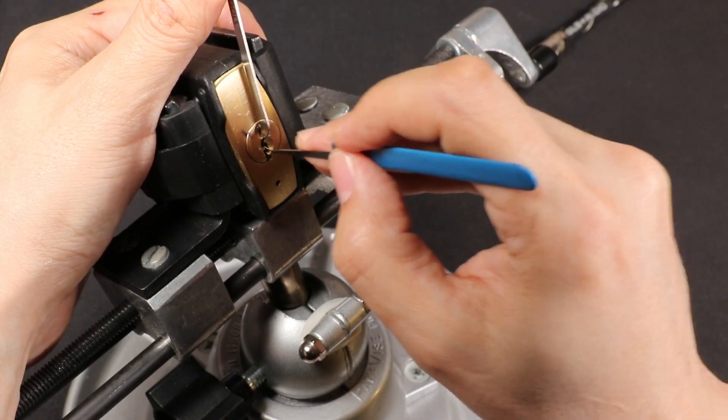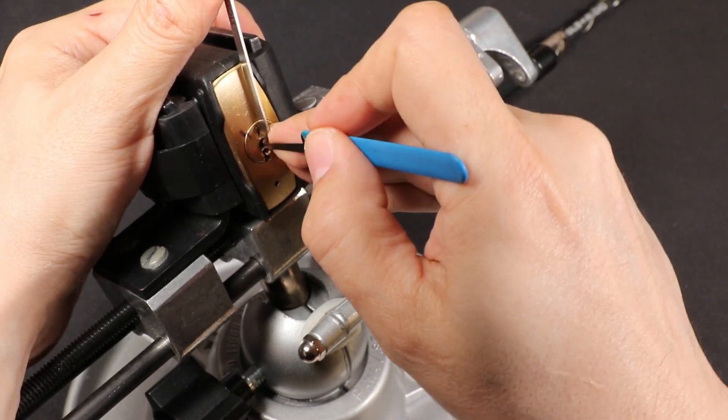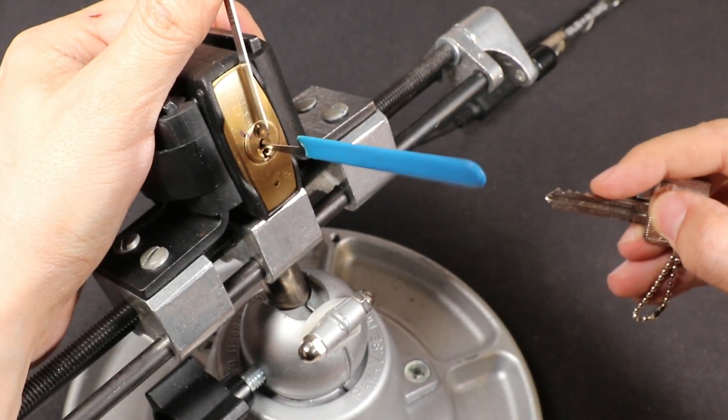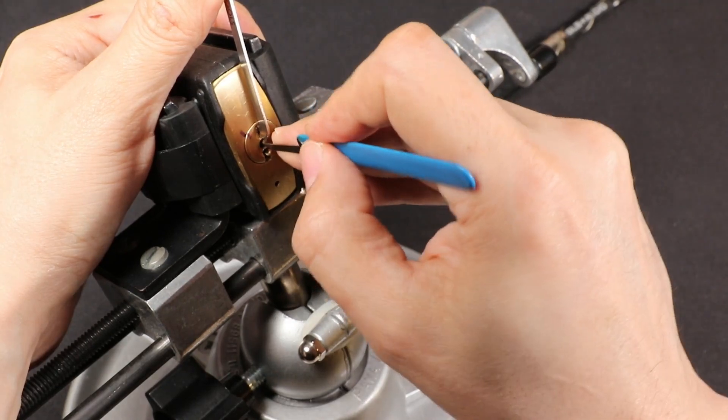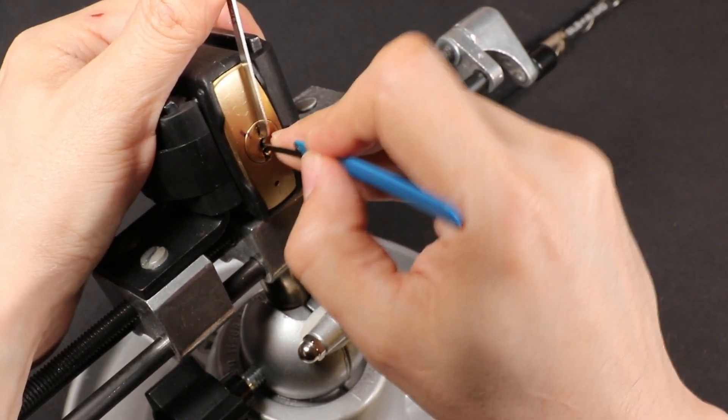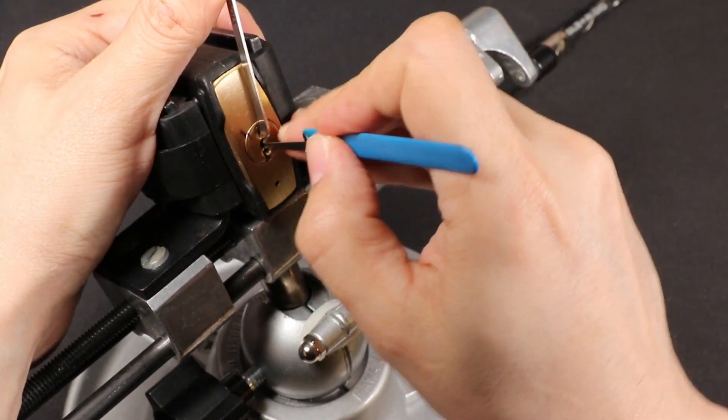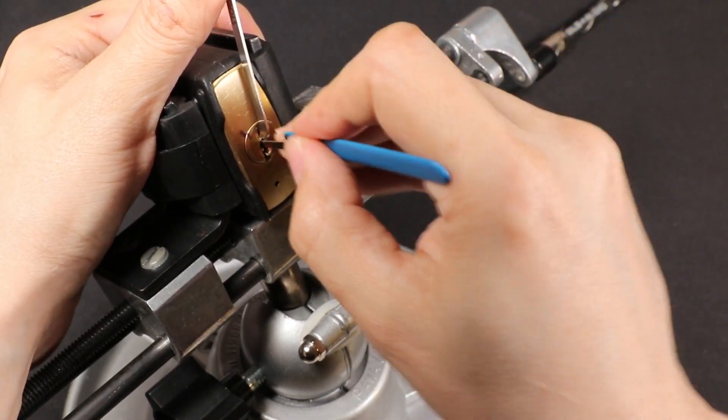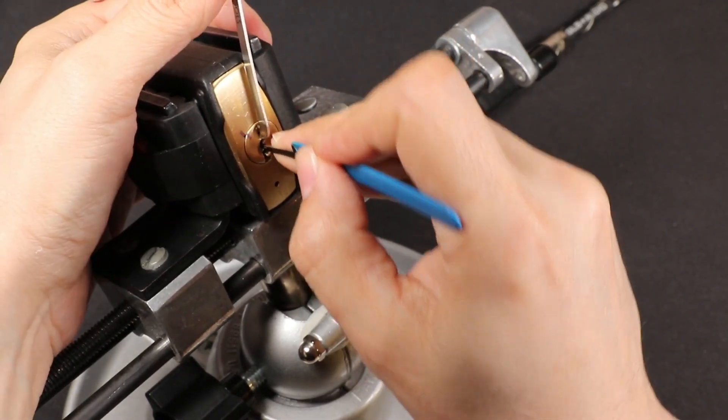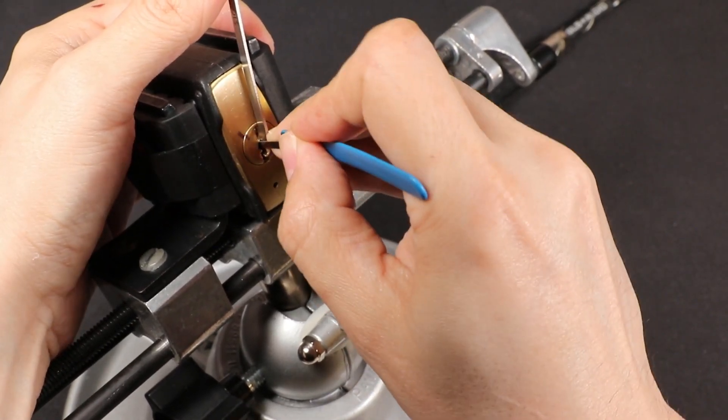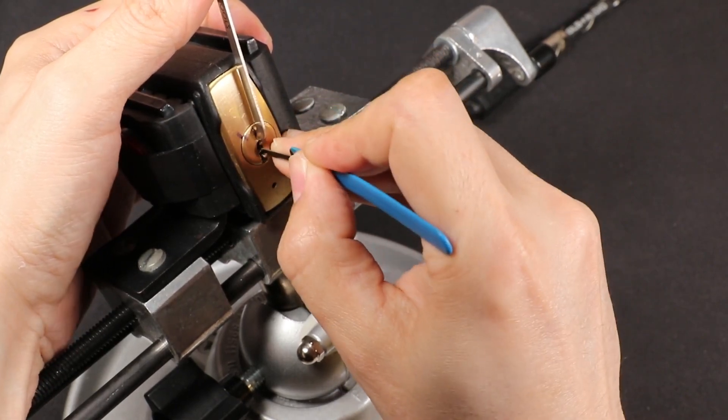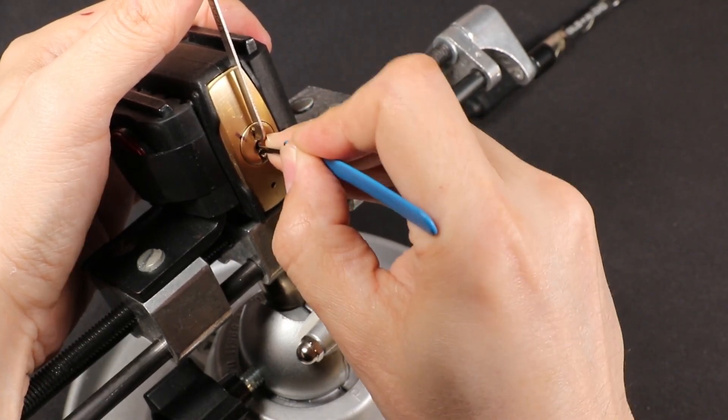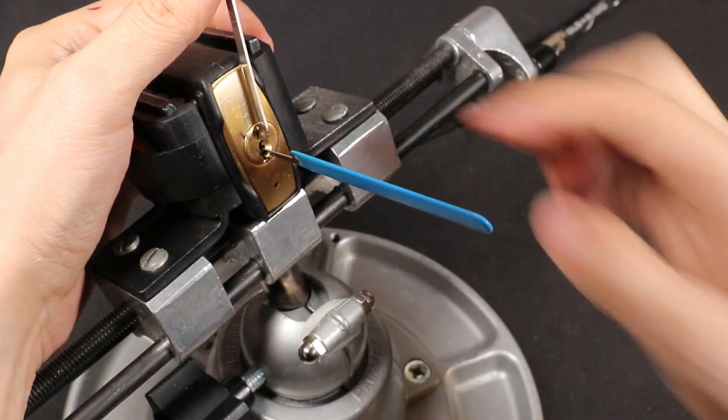This lock has six pins. This pick can't get under all the pins at rest, so if there were any no lifts I'd have to use a different pick. I'm trying to get under the very last pin, kind of scooping up on it, letting off tension to get under that last pin. Once I do, I feel counter rotation already.